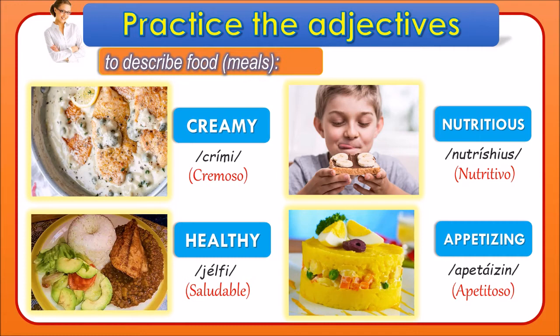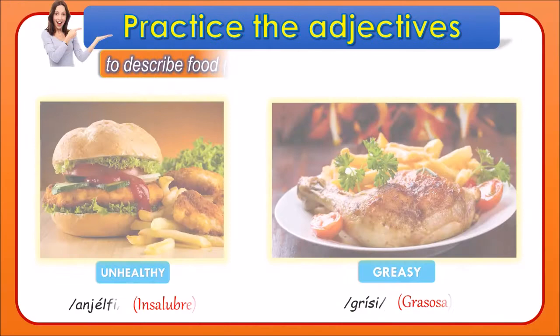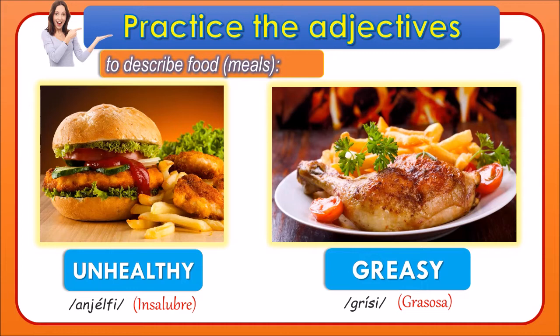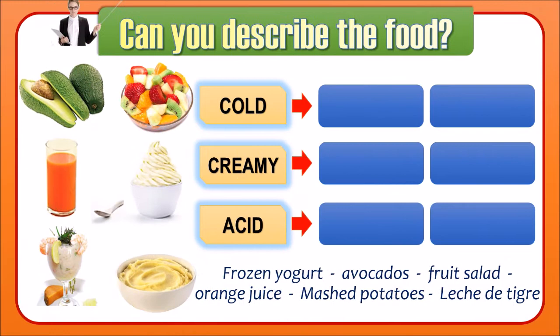Let's continue: creamy, nutritious, healthy, and appetizing. Other adjectives are unhealthy and greasy. When something is not so healthy and is bad to eat in excess — nutritionally it's not good — we say unhealthy. For instance, junk food. And greasy — when the food is very greasy, for instance fried chicken.